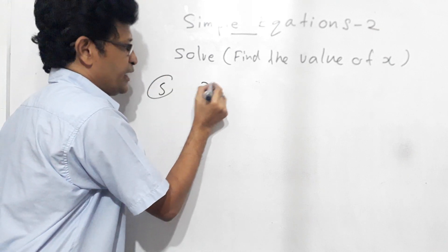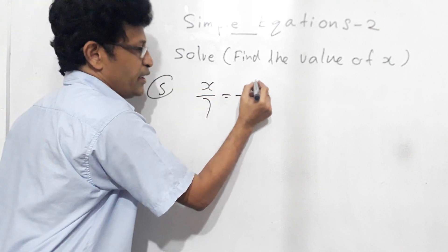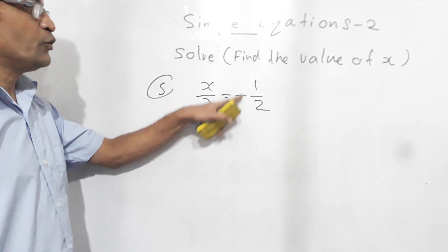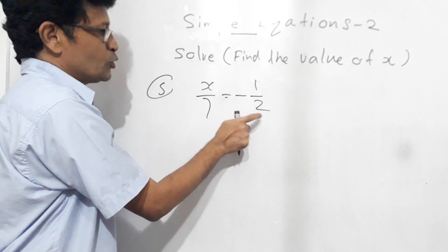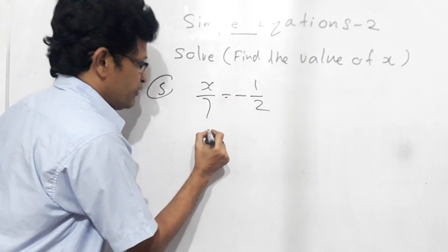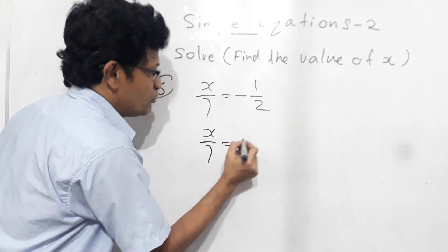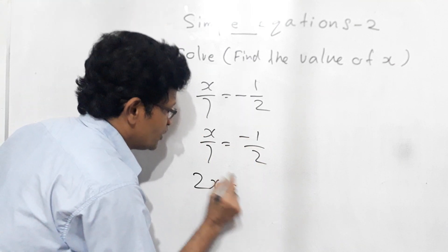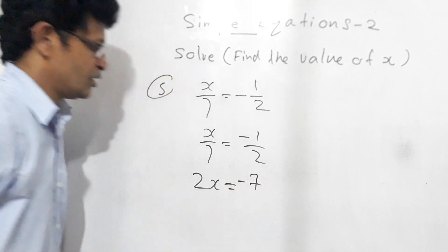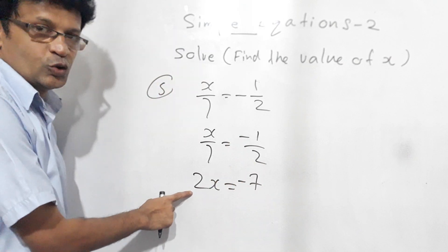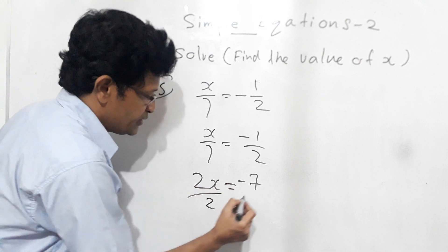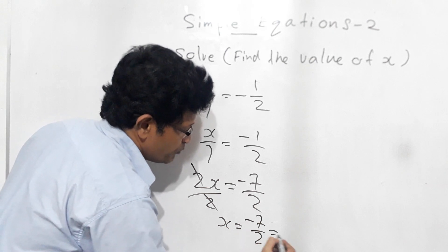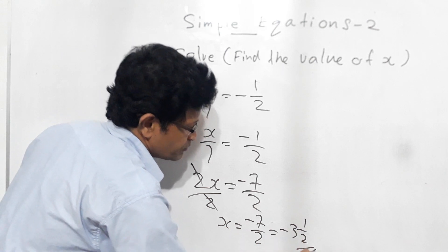Now the fifth question: x over 7 equals minus one half. We write this as x over 7 equals minus 1 over 2. Cross multiply: 2 times x gives 2x, equals 7 times minus 1, which is minus 7. Divide both sides by 2 — the 2s cancel — so x equals minus 7 over 2, that means minus 3 and a half.